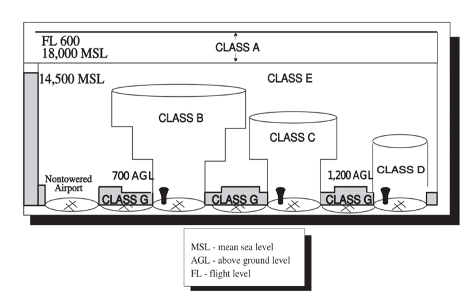Classes A, C and G are used in Mauritius. Class A airspace exists within the entire Mauritius-FIR flight information region above FL 245. Class C airspace exists within 150 nautical miles of Mauritius, below FL 245. Class G airspace exists in all other areas of the Mauritius-FIR.